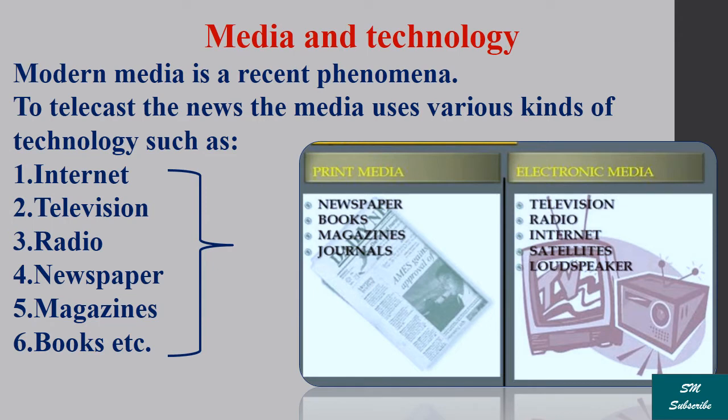Modern media is a recent phenomenon. The sources of media — internet, television, radio, newspaper, magazines, books, etc. — can be divided into two categories: print media and electronic media. Electronic media includes broadcasting and telecasting through radio and television, and also social media. Print media applies to the publishing industry, which in a narrow sense means books, newspapers, magazines, and journals.